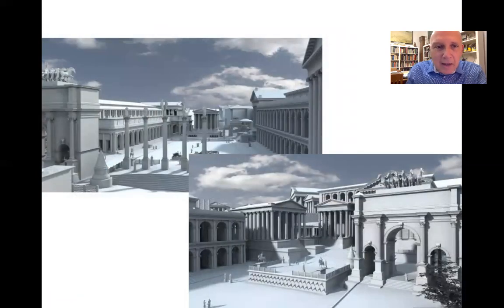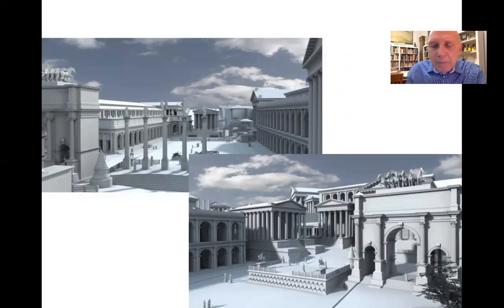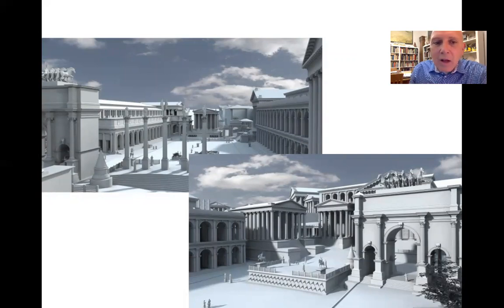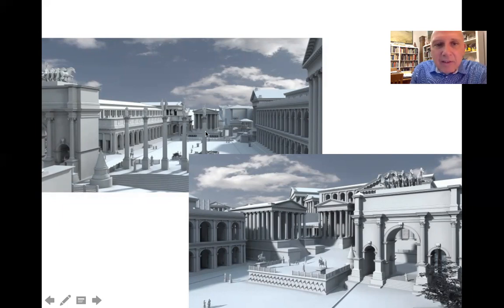These next images show the arch's prominent location. On the left you see the archway with its quadriga — its chariot with horses — and presumably an image of Septimius Severus atop. On the right you see it again with the rostra to the left. The rostra was a podium decorated with the prows of ships destroyed by the Roman Navy in sea battles. These two diagrams show what historians and archaeologists believe the rostra looked like at the time this magnificent archway was constructed.